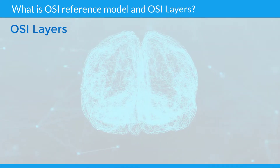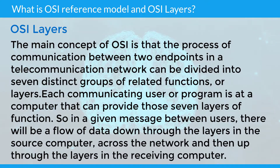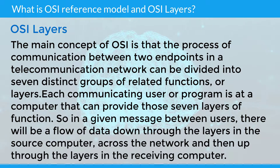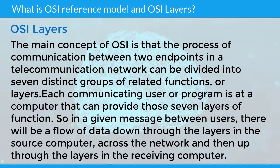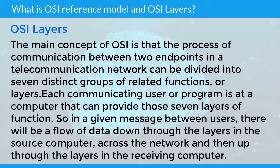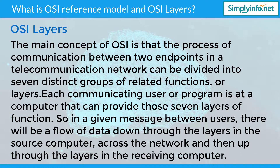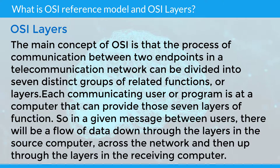The main concept of OSI is that the process of communication between two endpoints in a telecommunication network can be divided into seven distinct groups of related functions or layers. Each communicating user or program is at a computer that can provide those seven layers of function. So in a given message between users, there will be a flow of data down through the layers in the source computer, across the network, and then up through the layers in the receiving computer.